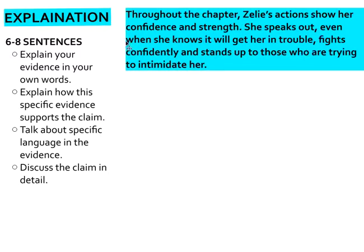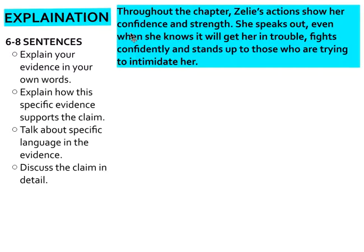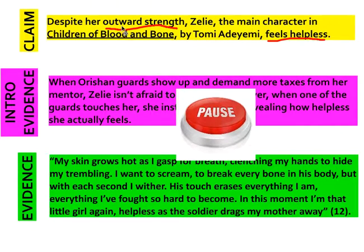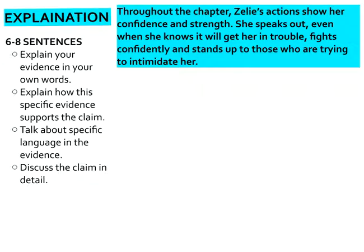So let's look at the different parts of my explanation. Throughout the chapter, Zelie's actions show her confidence and strength. She speaks out even when she knows it will get her in trouble, fights confidently, and stands up to those who are trying to intimidate her. Here I want to prove to you that she shows outward strength, so I'm discussing my claim in more detail — showing that she shows strength through speaking out, fighting confidently, and standing up to those who intimidate her.